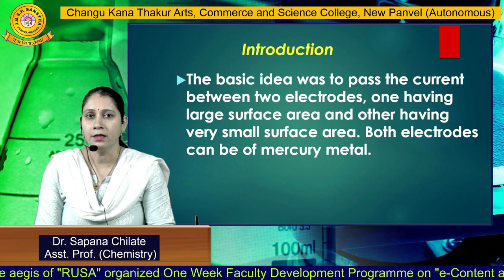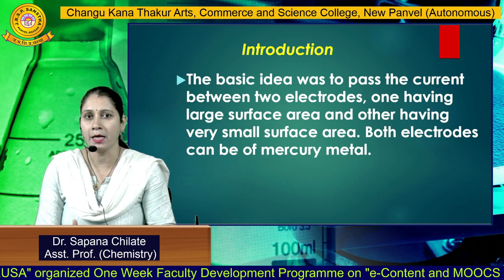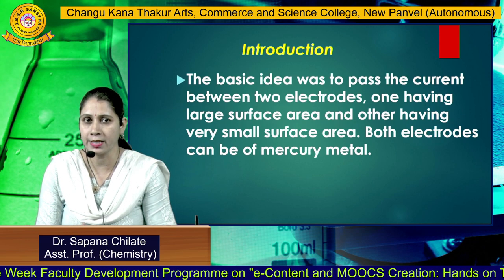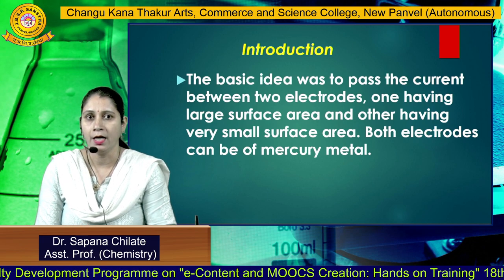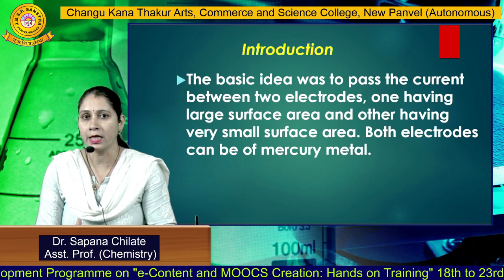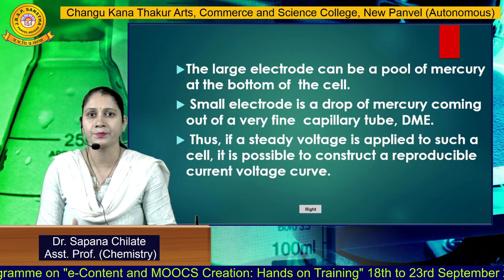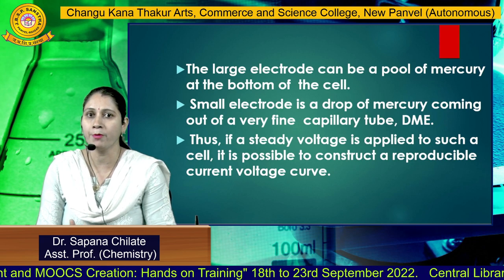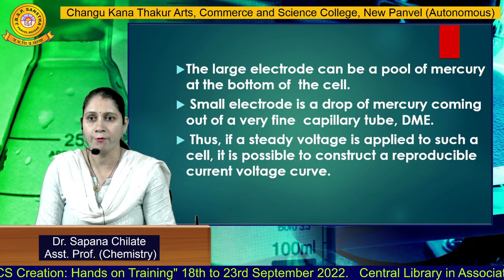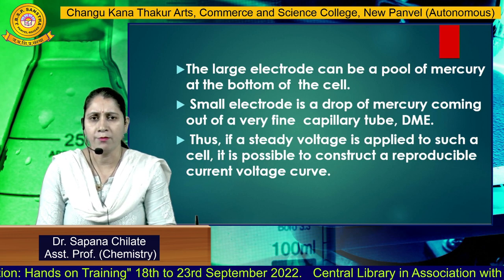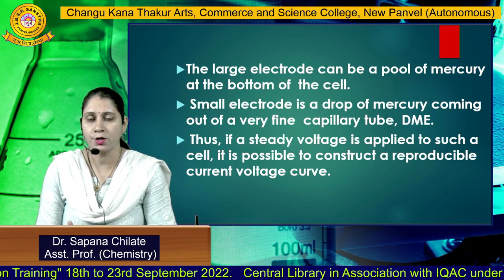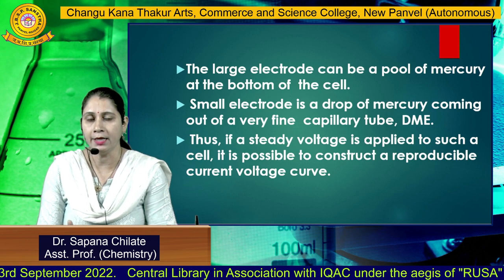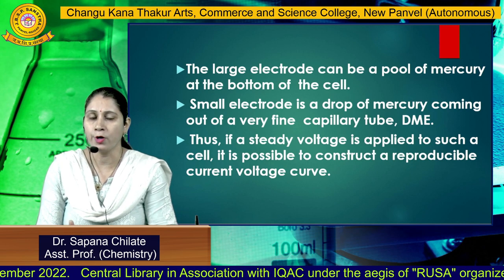The basic idea of this technique is the passing of electric current between the two electrodes — one having a large surface area and the other having a small surface area. In this particular case, both electrodes can be made up of mercury metal. The large electrode is a pool of mercury at the bottom of the cell, and the small electrode is a drop of mercury coming from a fine capillary — that is the dropping mercury electrode. A steady voltage is applied in such a way that a reproducible current-voltage curve is produced.